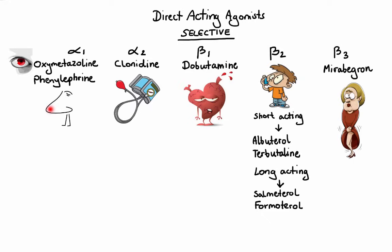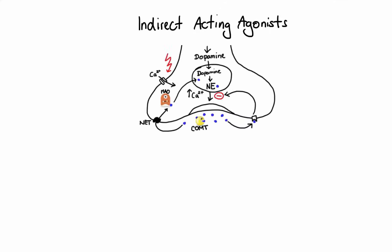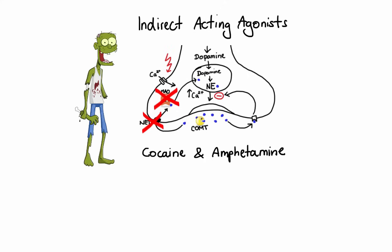That's it for direct-acting agonists. Now let's move on to indirect-acting adrenergic agonists. Drugs in this group do not directly interact with postsynaptic receptors. Instead, they enhance the effects of epinephrine or norepinephrine by either inhibition of their reuptake or inhibition of their degradation. Best examples are cocaine and amphetamine, which work by blocking reuptake of norepinephrine as well as dopamine, particularly in the region of the brain that controls the reward system. This is why they are highly addictive. Additionally, these drugs stimulate alpha-1 and beta-1 receptors, which lead to sympathetic response such as rise in blood pressure and increased heart rate.